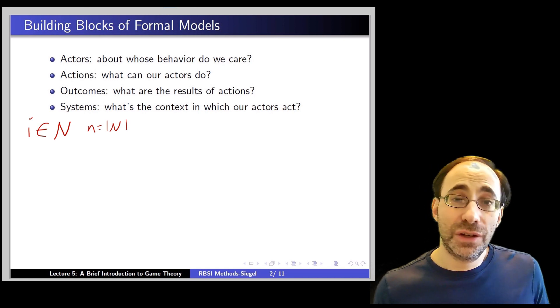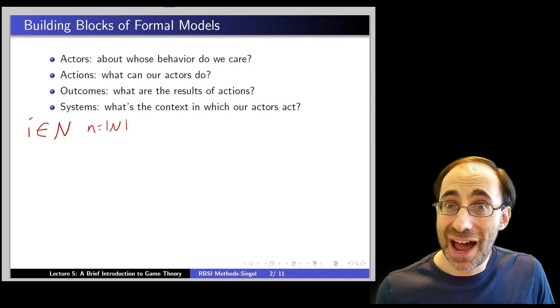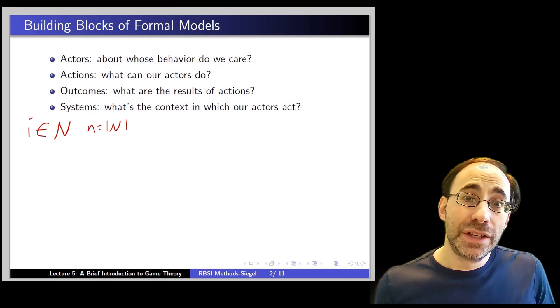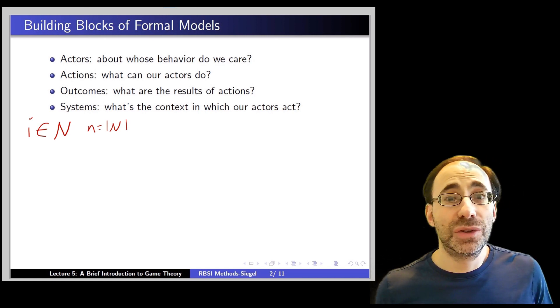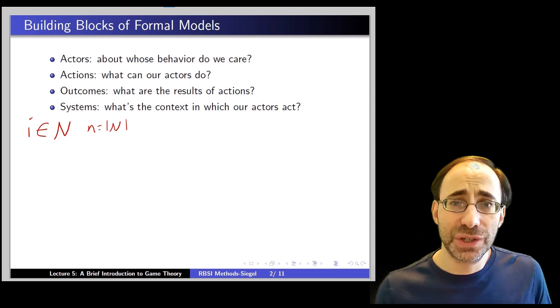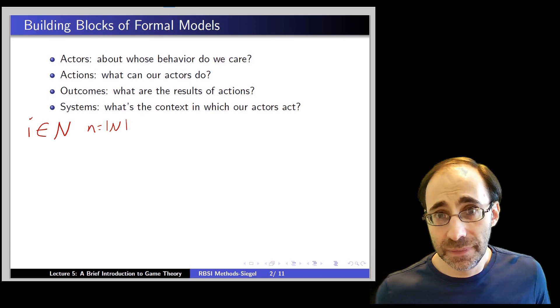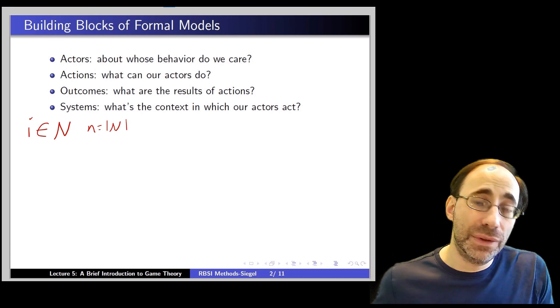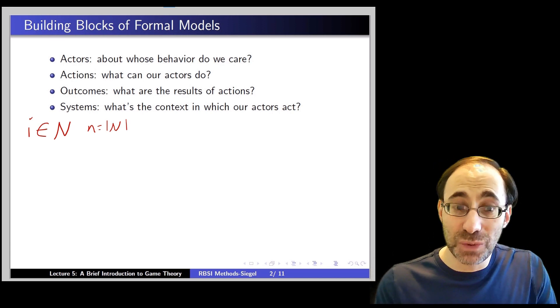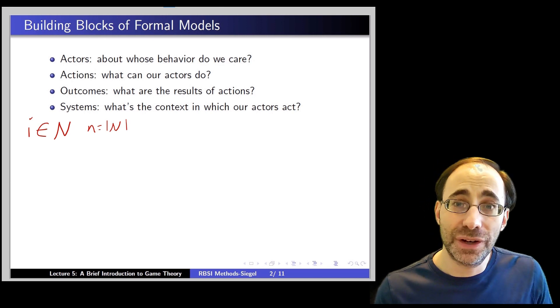This kind of notation works pretty well when we have a discrete number of actors in our model, as we often do. It turns out that game theory gets more and more complex the more actors we have in our model. So typically, you will see games that have two or three or maybe four individual discrete actors in them. But not too many more than that. I should say there are models, of course, with more actors than that. But you will often see ones with just a relatively small number of actors.